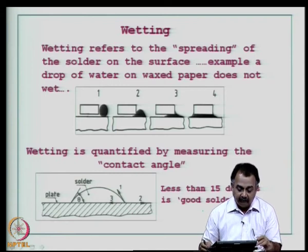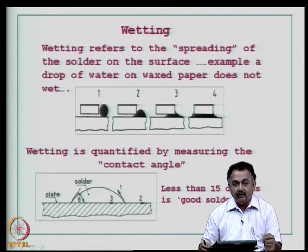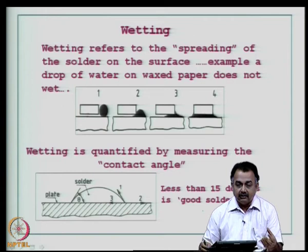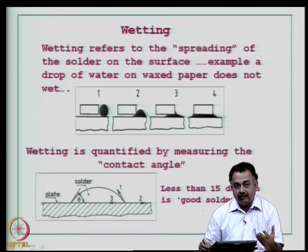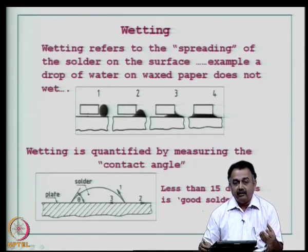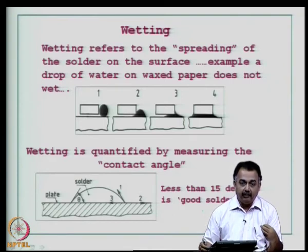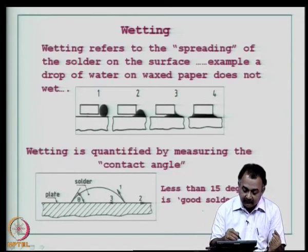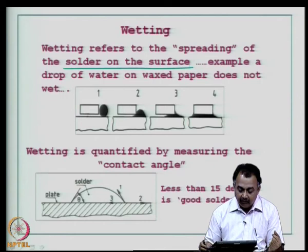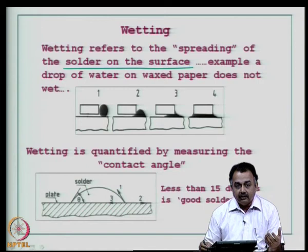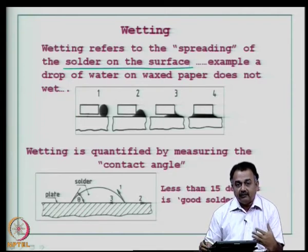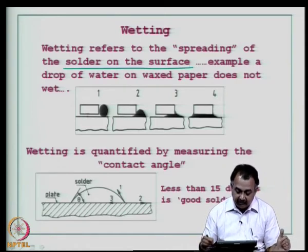Wetting refers to the spreading of solder on the surface. Surface tension aids the wetting process — as seen with BGA self-alignment, even with miss-registration you can achieve near 100% yield because of solder surface tension between the component pad and substrate pad. Wetting is quantified by measuring the contact angle. The solder should not wet the dielectric material — the dielectric should be free of solder material after the soldering process is complete.